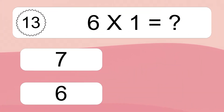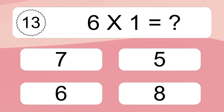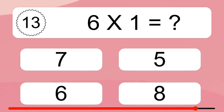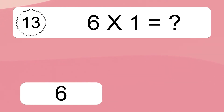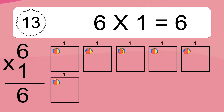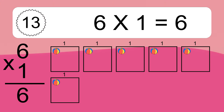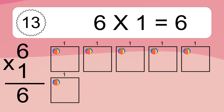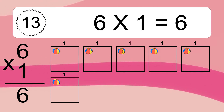Six times one equals what? Six times one equals six. We have six boxes and each box has one colorful ball inside. If you count all the balls in all the boxes together, you will have six times one balls. This equals six balls.